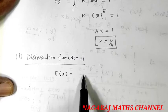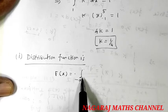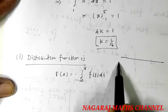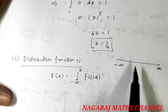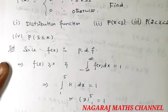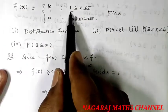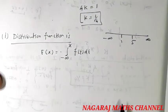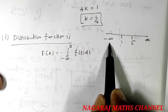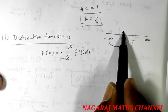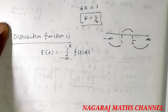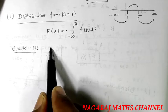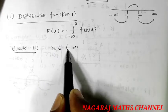Now, the distribution function F(x) is equal to the integral from minus infinity to x of f(t) dt. Since f(t) = 0 outside [1, 5], we consider 3 cases: three intervals — minus infinity to 1, then 1 to 5, and then 5 to infinity.